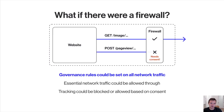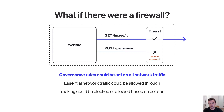What if there were a firewall? If browsers had a firewall, governance rules could be set to regulate all network traffic on the user's device. Essential network traffic such as image loads could be allowed through, but traffic related to tracking the user could be blocked until consent is provided. Even third-party analytics scripts could run as normal, but the data wouldn't leave the user's device. A firewall essentially converts all tracking into local tracking.